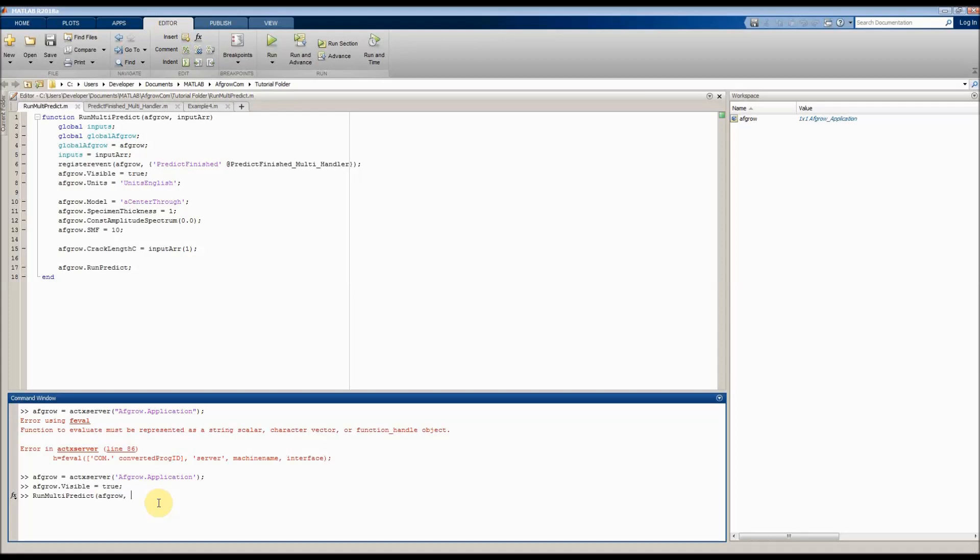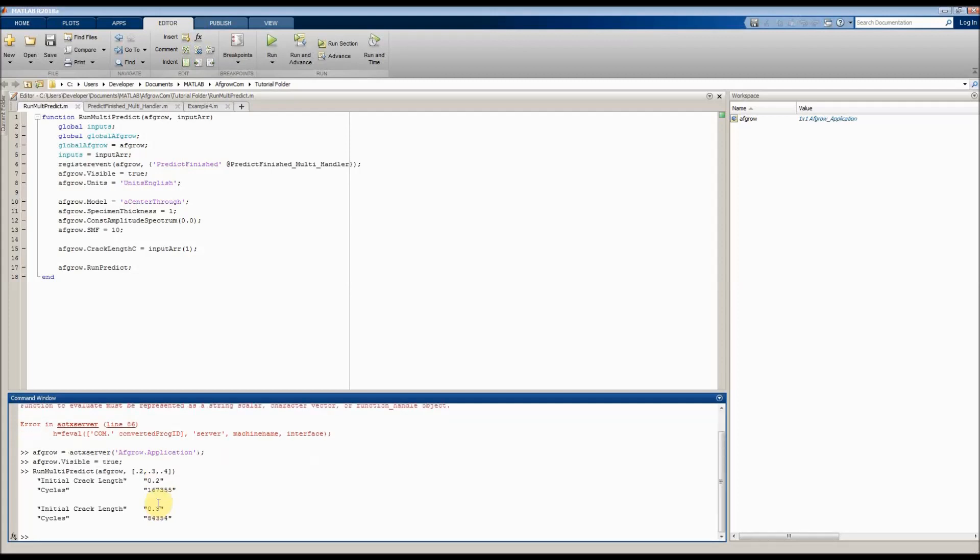For this, it's going to be just crack length. So I'm going to go ahead and do 0.2, 0.3, 0.4 for this example. Okay, there we go. So now it's iterating through all of the crack lengths, and then outputting the initial crack length and then the total amount of cycles until failure. Next, we need to make a new script to make our own function.